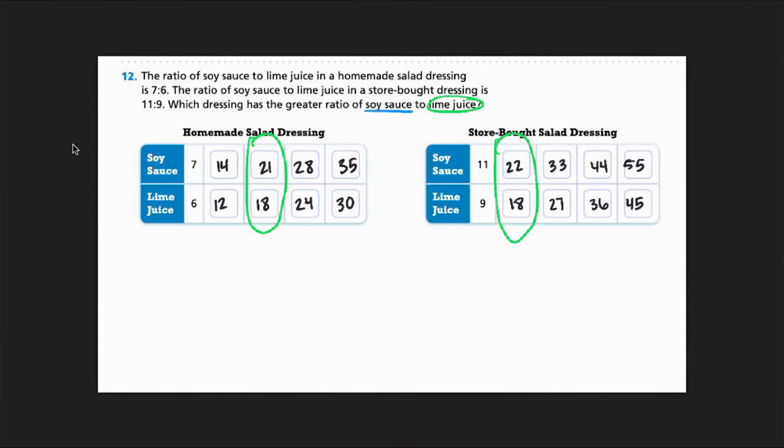Okay, and which one has more soy sauce? Well, the store-bought one does because it has 22 and this one only has 21. So we'll say, for our answer, we would write a complete sentence. So store-bought, though, for now, in our video, we'll say store-bought had the greater ratio of soy sauce to lime juice.